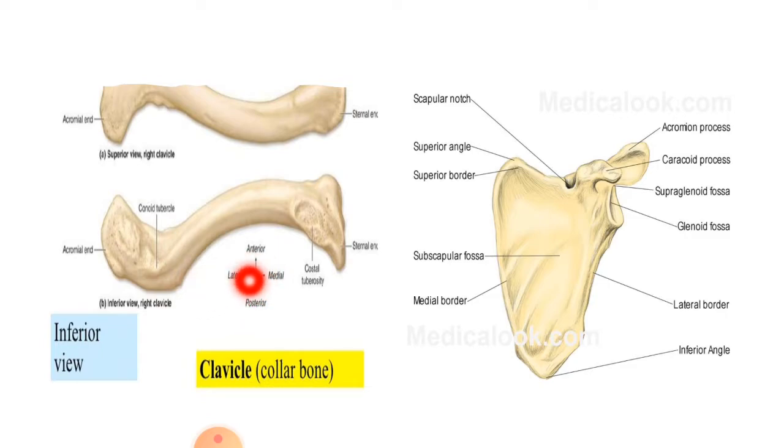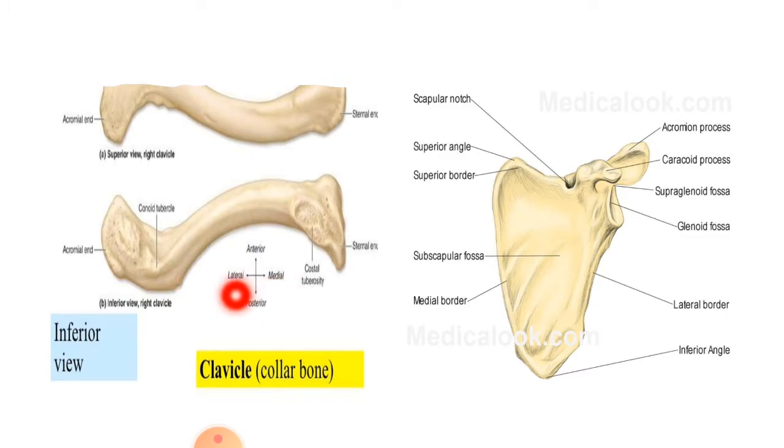The clavicle has an anterior surface, a posterior surface, and medial and lateral borders.